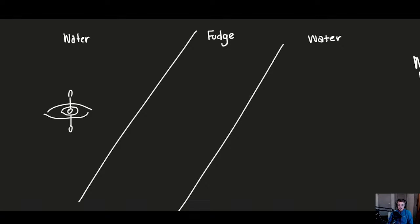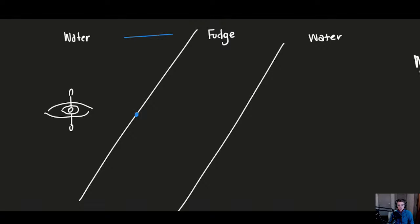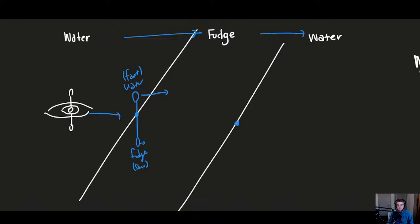Let's talk about the transition zones — from water to fudge, and fudge back to water — to describe why slowing leads to bending and speeding up also leads to bending. When the kayaker is at the boundary, one paddle is in water (fast side) and the inner paddle is in fudge (slow side). The slow side slows down, the fast side keeps going, leading to one side going faster than the other, which causes rotation — that's why we see bending.